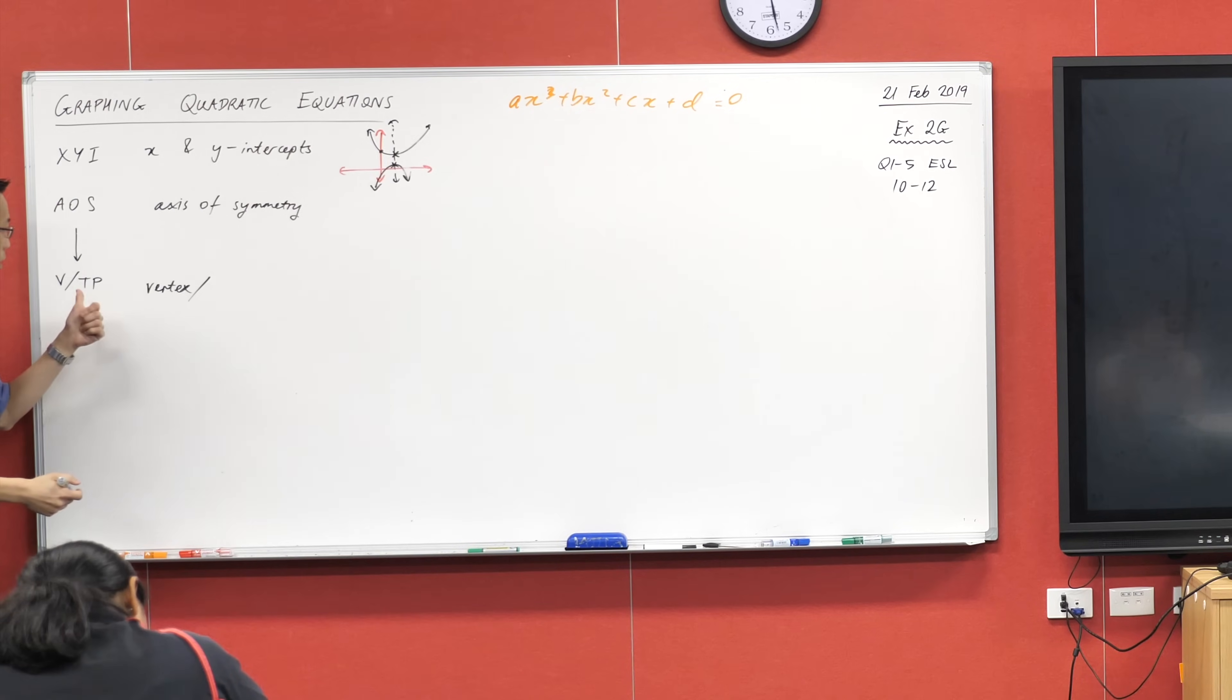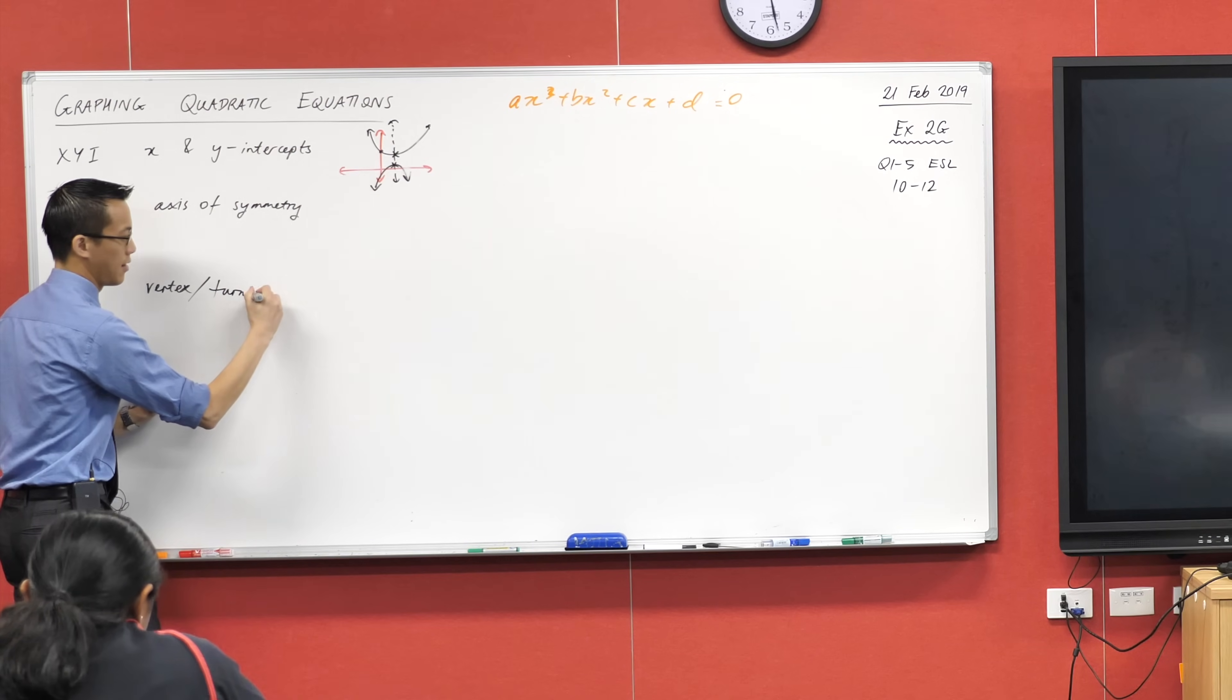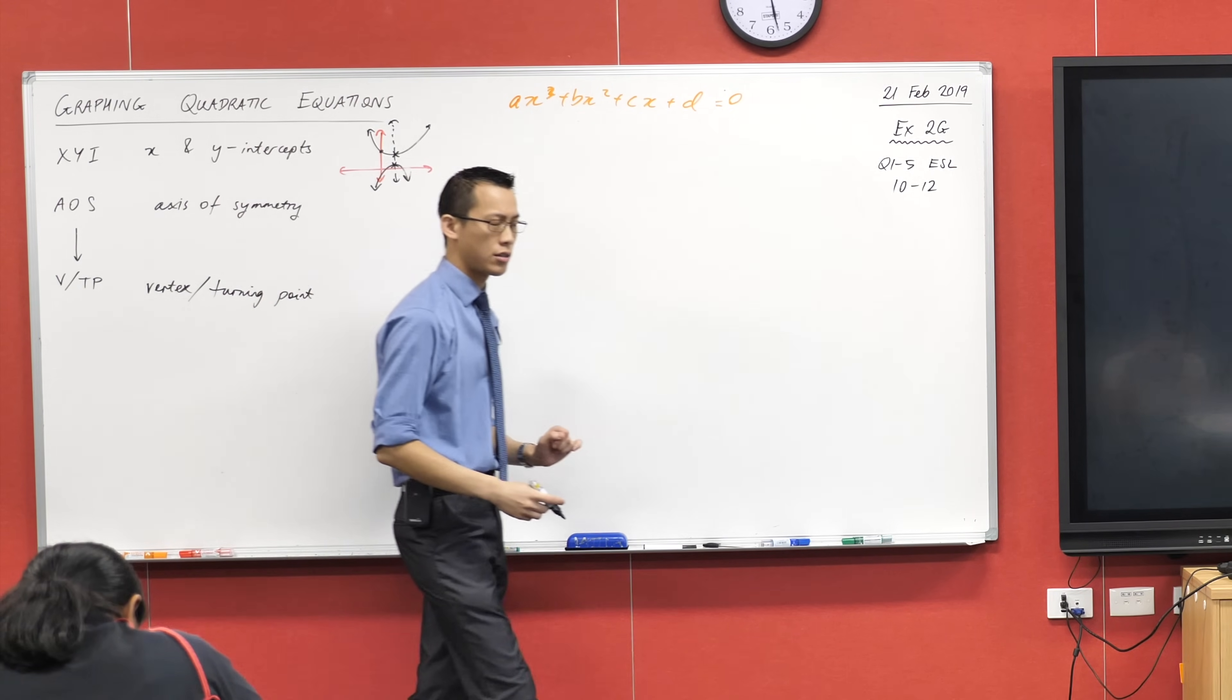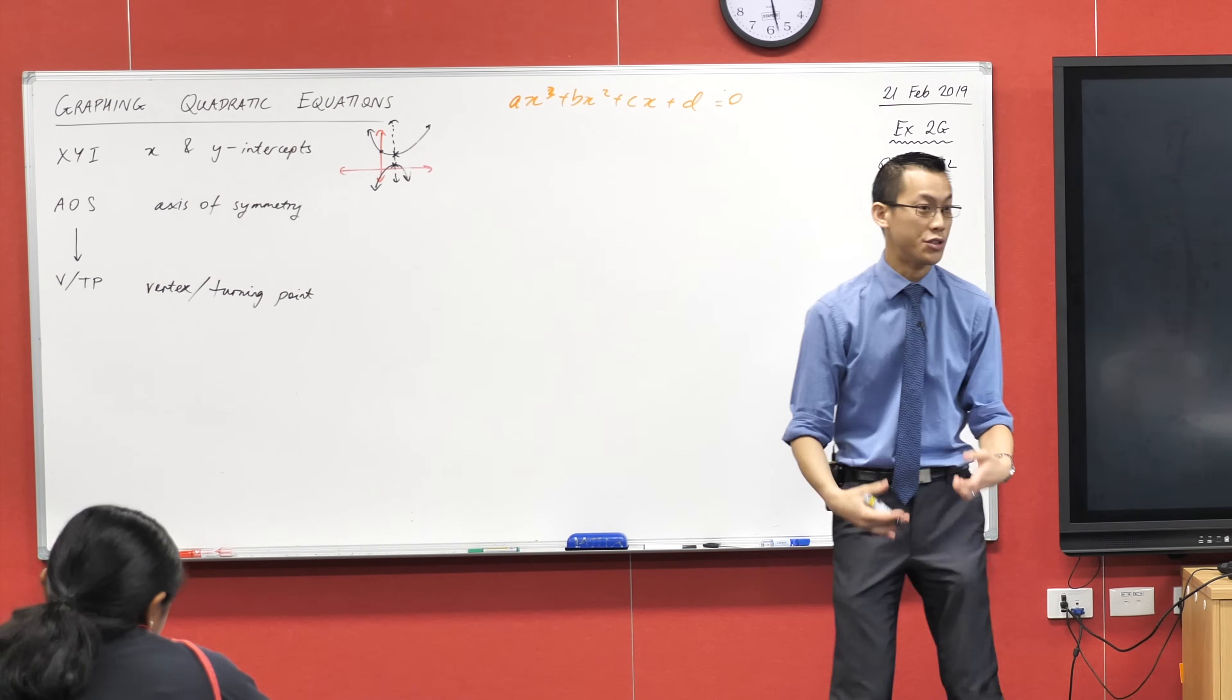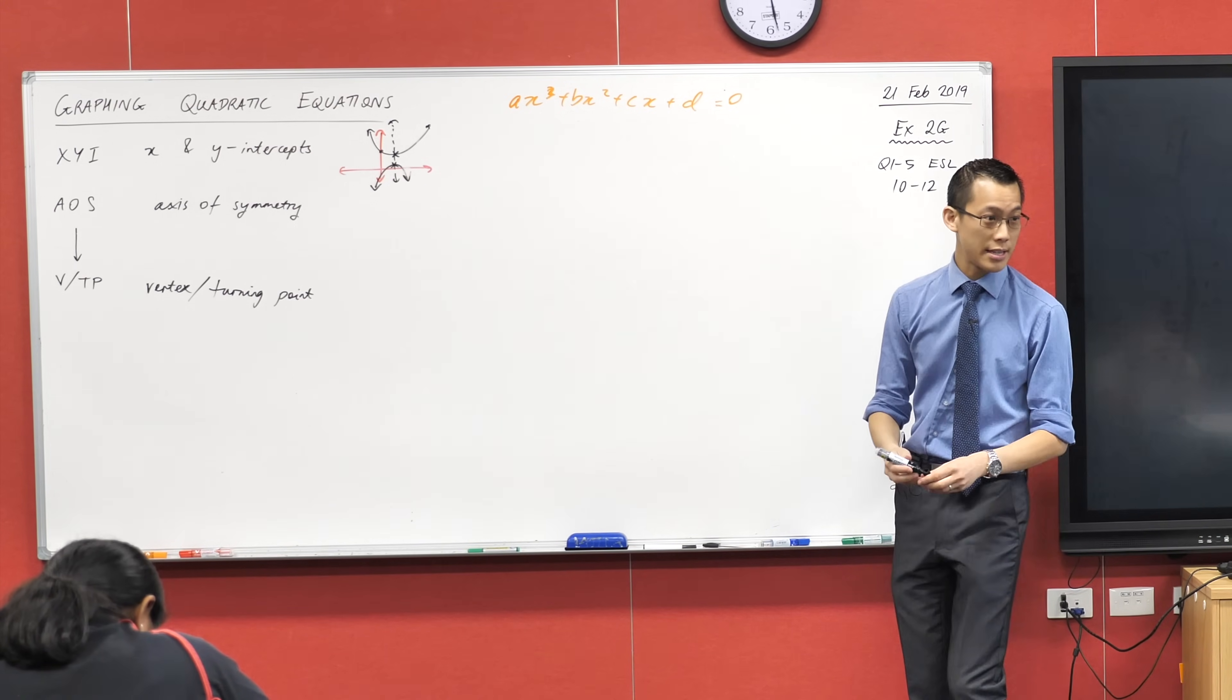In other words, it kind of like turns around. It changes direction. So we call this point not just the vertex. In this context, it's also the turning point because it literally is the point at which the parabola turns around. So in this context, with quadratics, these end up being the same thing.